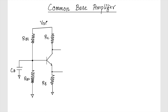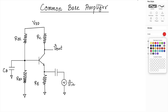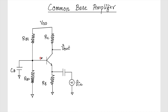I have my supply VDD here, and I am collecting my output at the collector. I will be applying my signal through a capacitor. This is my VIN, and I am trying to collect the output from the collector. So this is a common base amplifier. It is called common base because the base is grounded — I am neither applying my signal here nor collecting the output. I am applying signal at the emitter and collecting the output from the collector.